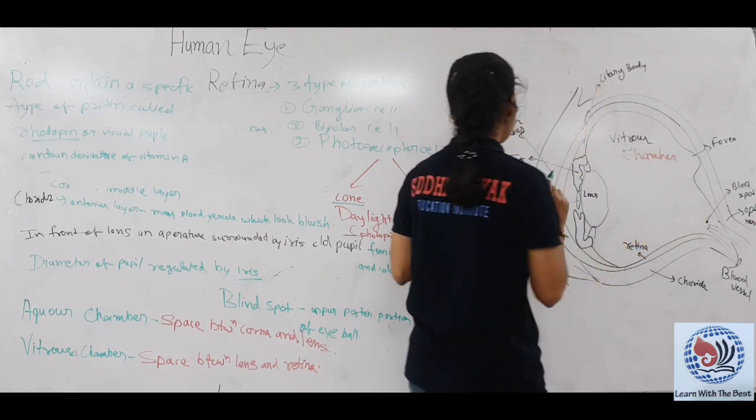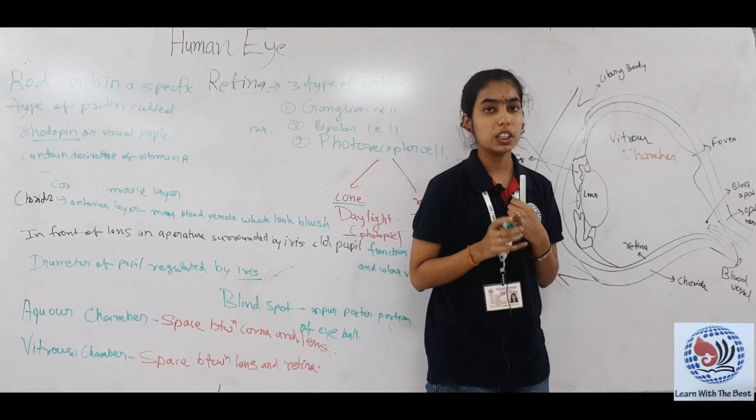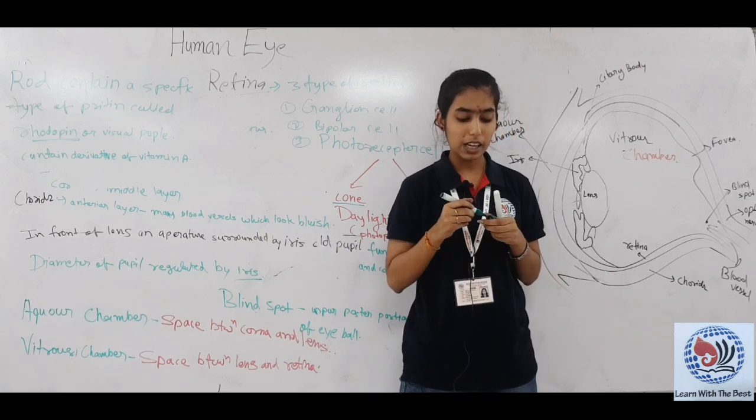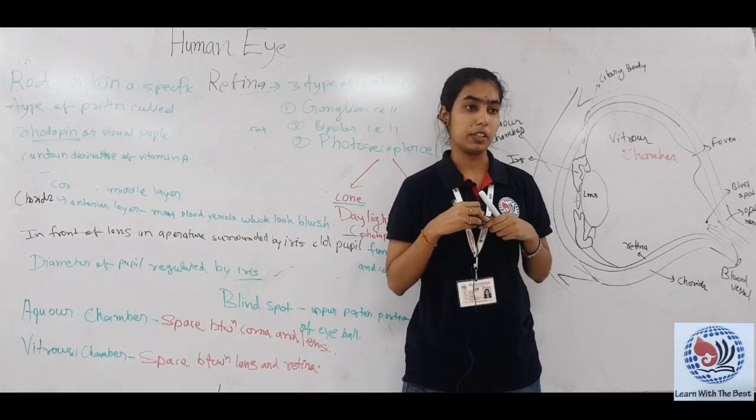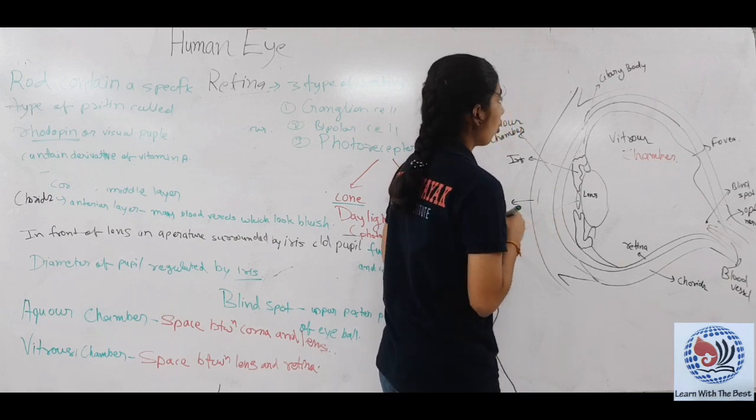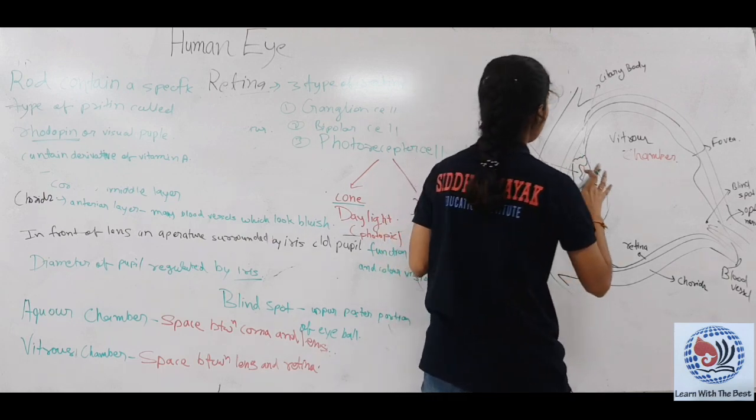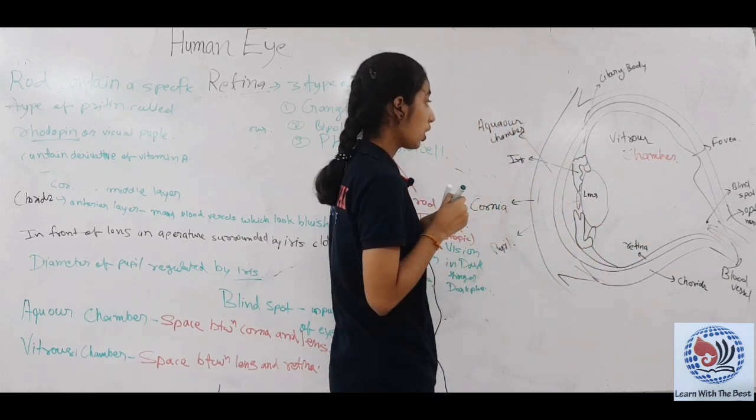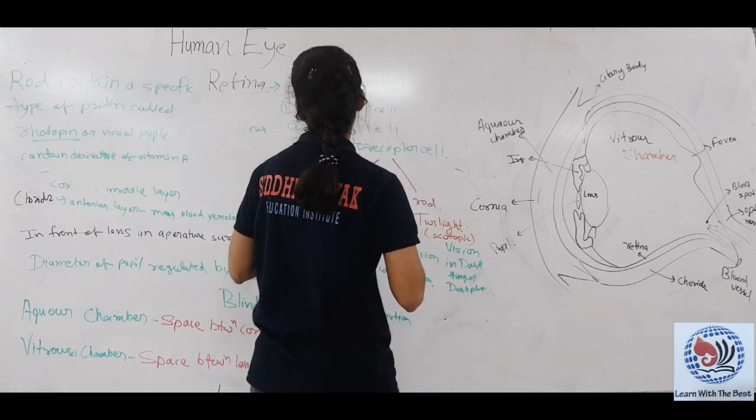Photoreceptor cells especially contain light-sensitive photopigments. Now we will have the proper mechanism of how we can see.